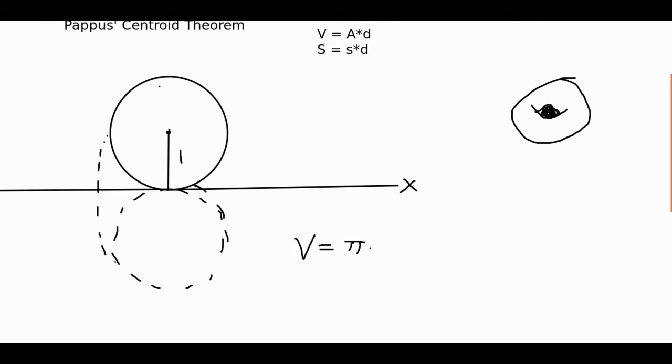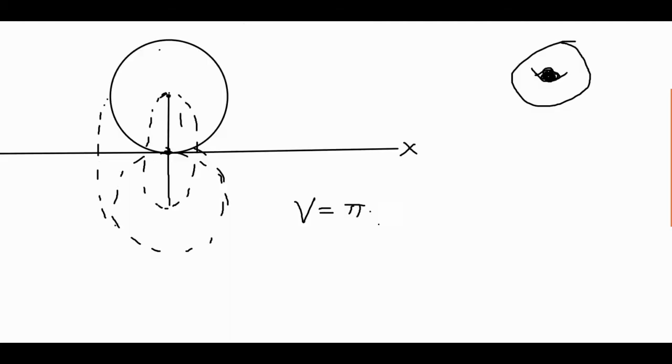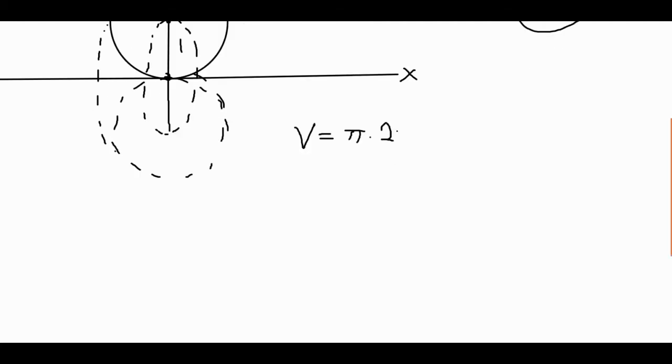So, we want to know the distance traveled by the centroid. Well, that's obvious because it's going to rotate around the tangency point, one full rotation with a fixed radius of 1. So the distance is 2 times pi times 1, which is 2 pi r, but r is 1, so we just get 2 pi squared is the volume.